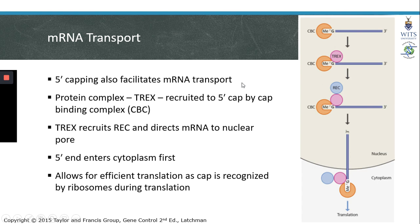5' capping is also involved in facilitating mRNA export. The 5' cap becomes bound by the cap binding complex, which can recruit another complex called TREX. Recruitment of TREX to the 5' cap of an mRNA leads to recruitment of REC, which transports the mRNA out of the nucleus through the nuclear pore and into the cytoplasm. When REC is recruited via TREX, this leads to the mRNA being exported with the 5' cap entering the cytoplasm first.